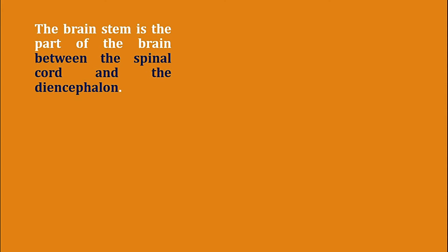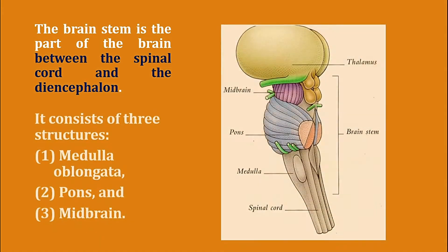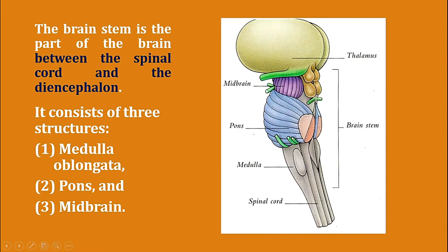The brain stem is the part of the brain between the spinal cord and the diencephalon. It consists of three structures: medulla, pons, and midbrain.